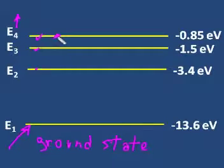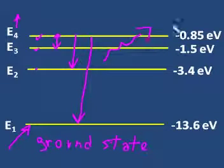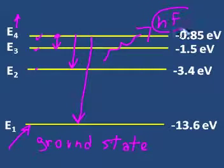Let's suppose that it was taken to the E4. Well, it can fall down to E3. It can now fall to E2. It can fall to E1. And each time it moves from one energy level to the other, it will emit a photon of light, hf.